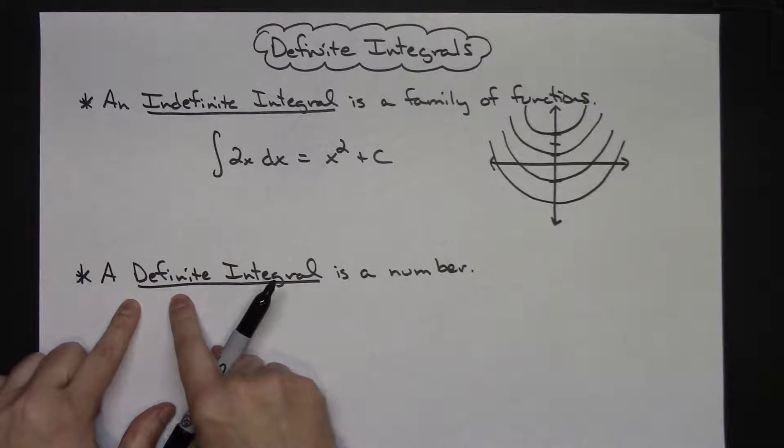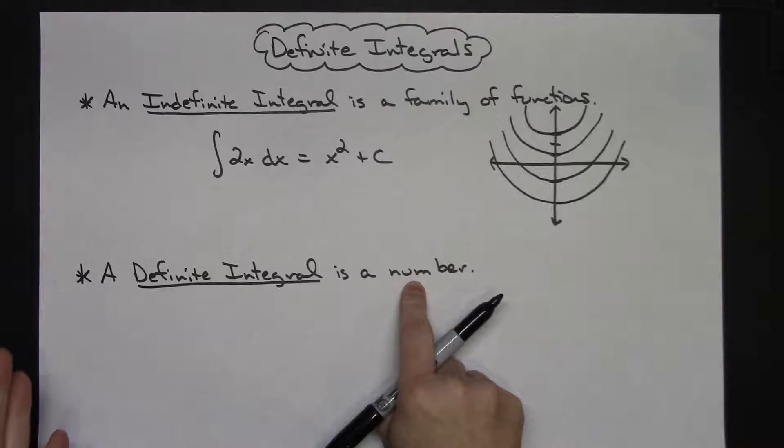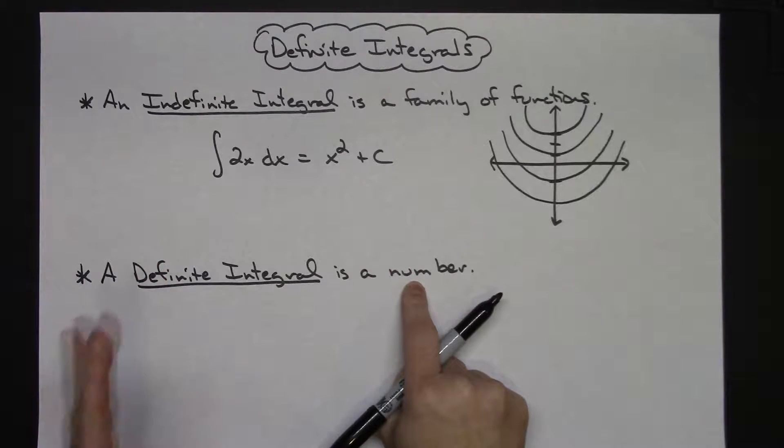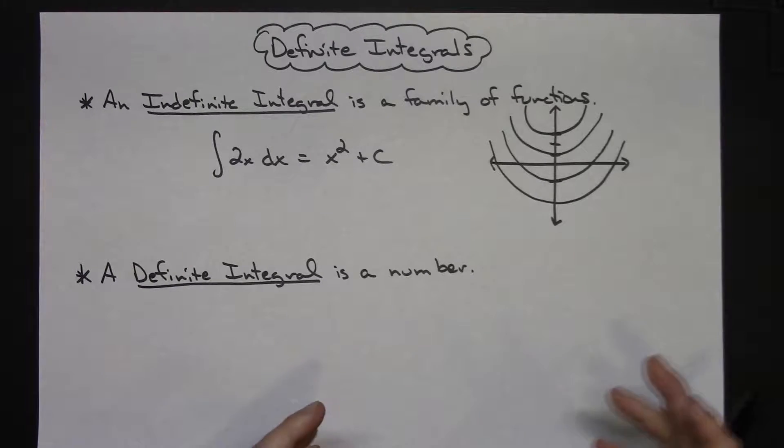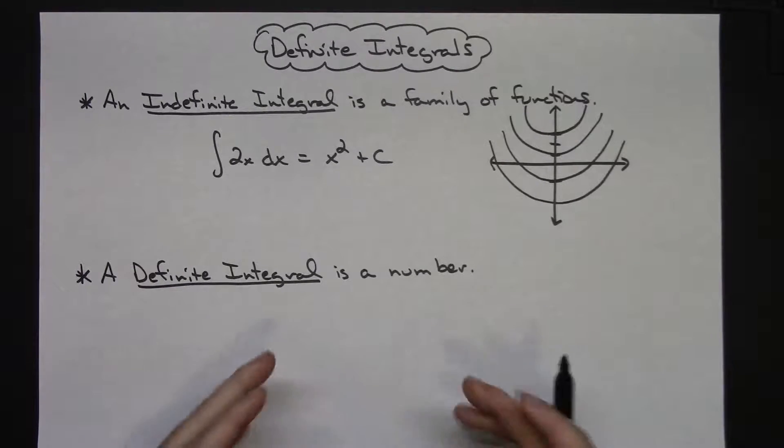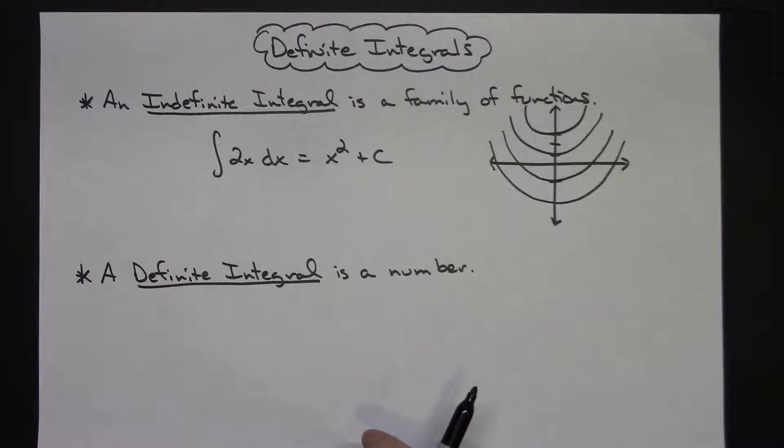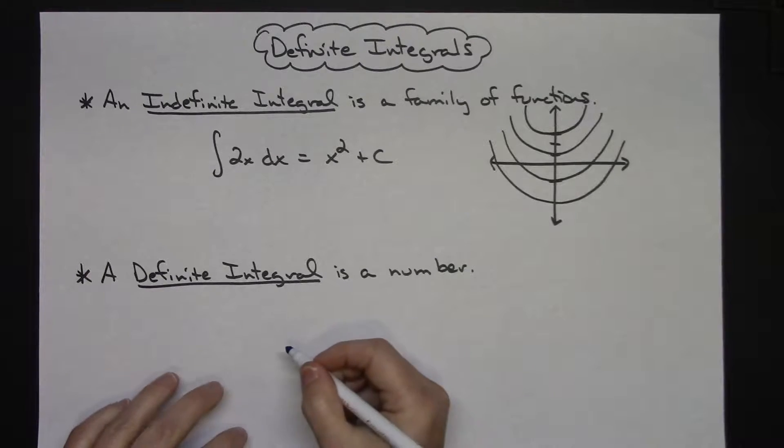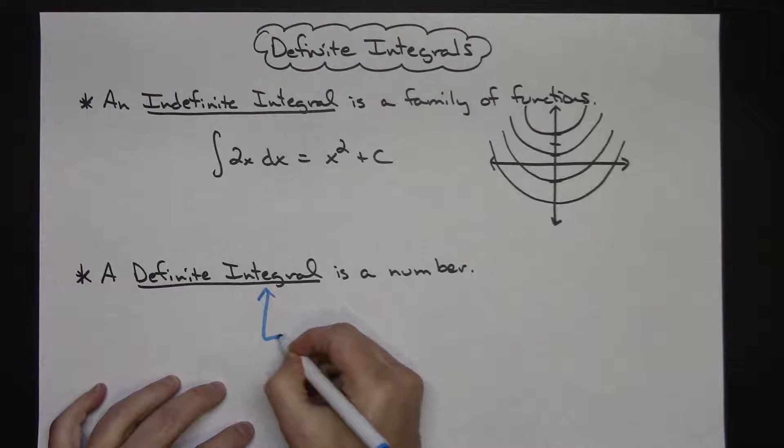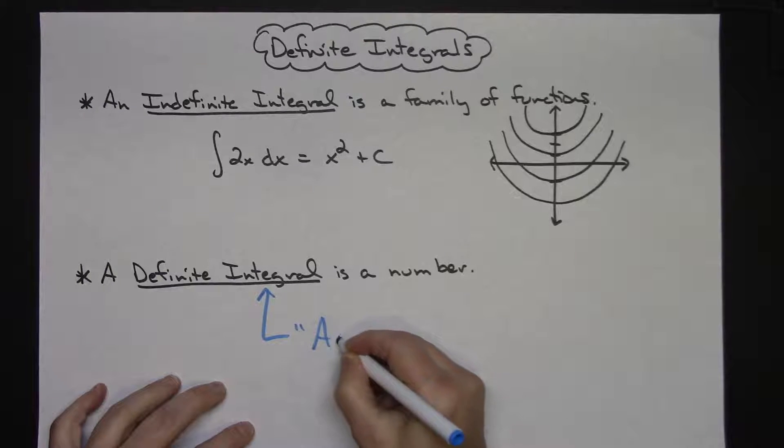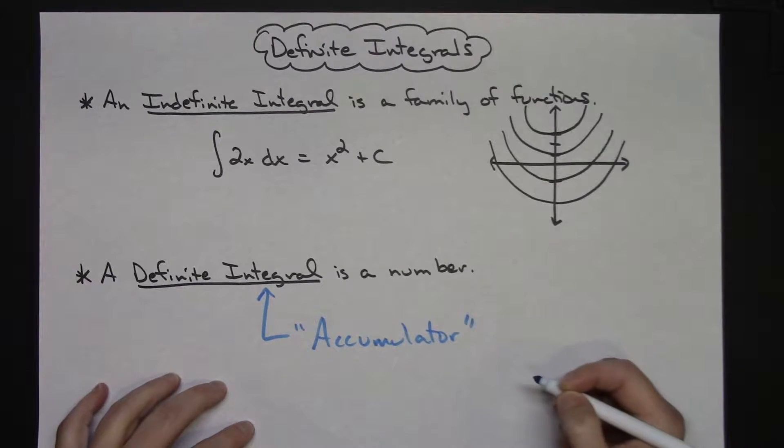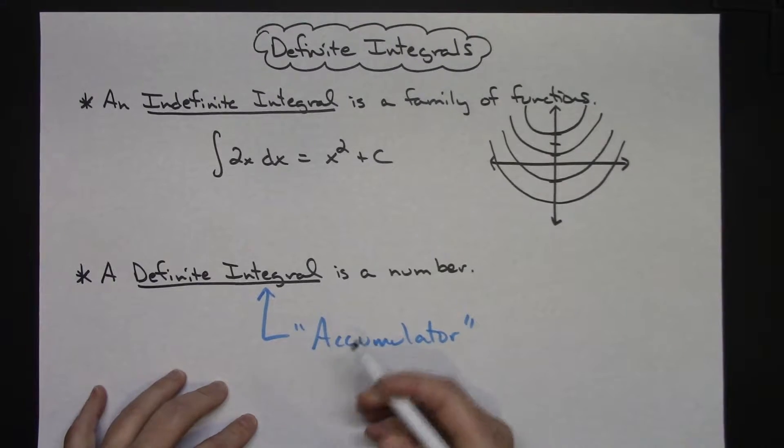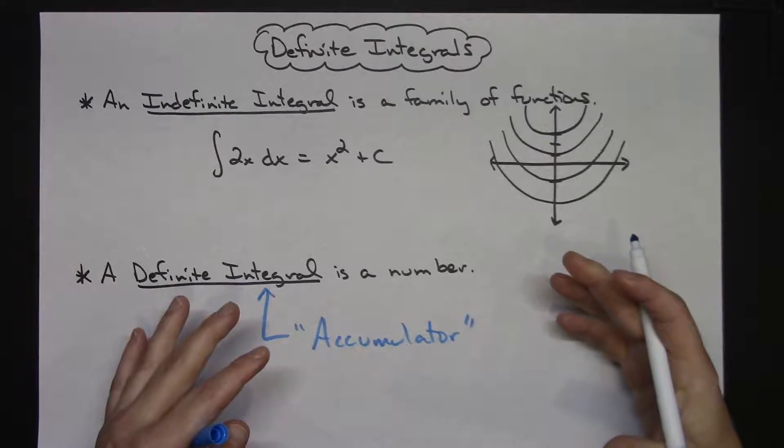Whereas the definite integral is going to be a number. We're going to look at it as like the area of a region, the area under the curve - that's usually the first introduction of it. Something that I always like to tell my students is I like to think of the integral being an accumulator. Not an official math definition or anything, but the integral itself accumulates things.